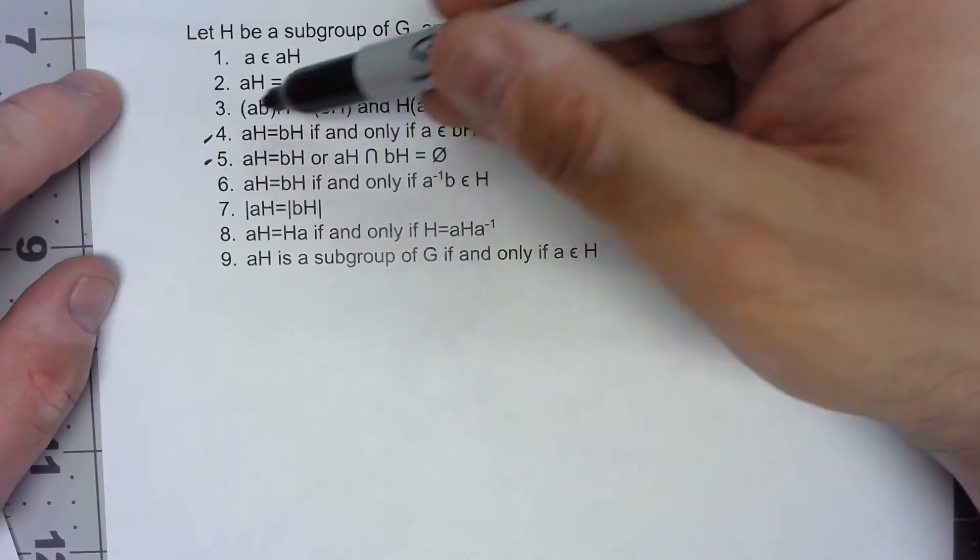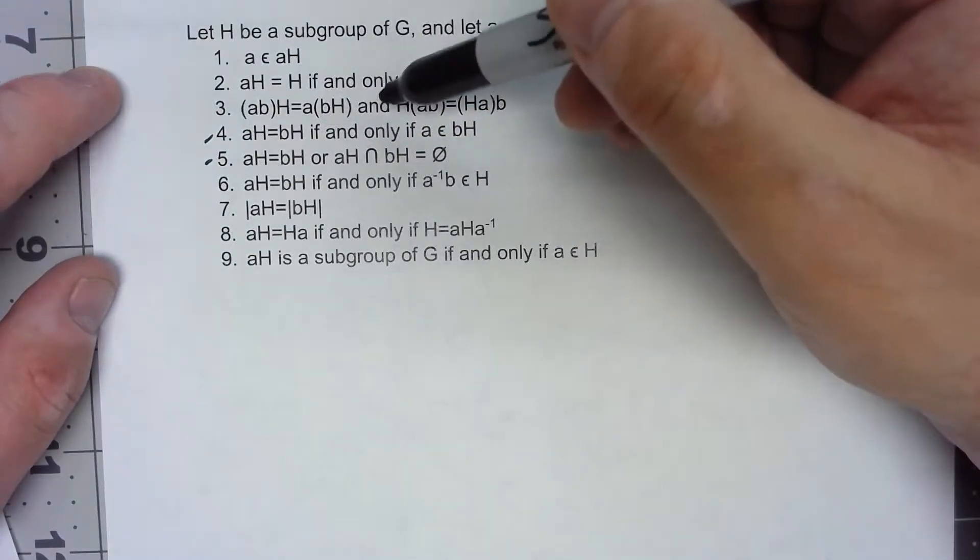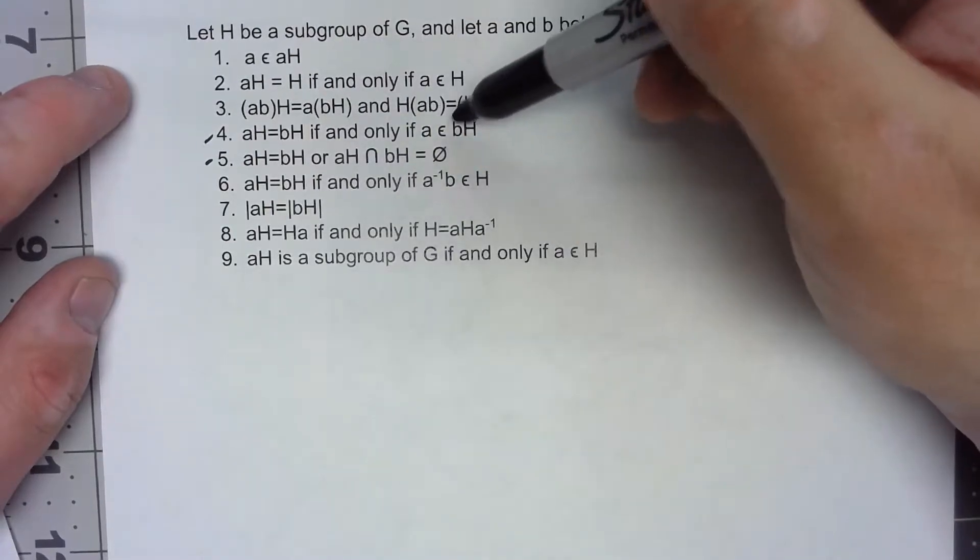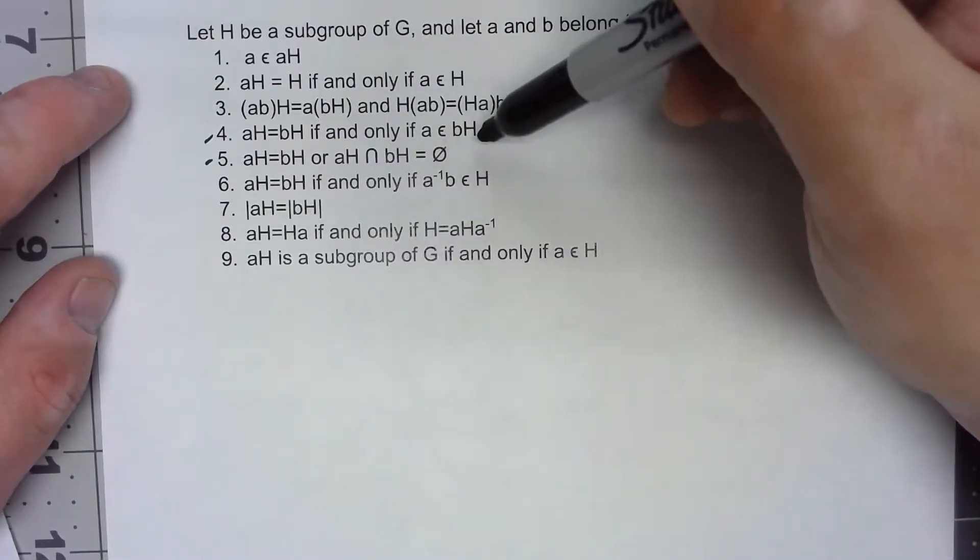AH equals BH, two left cosets are the same, if and only if the element A is in the coset BH.